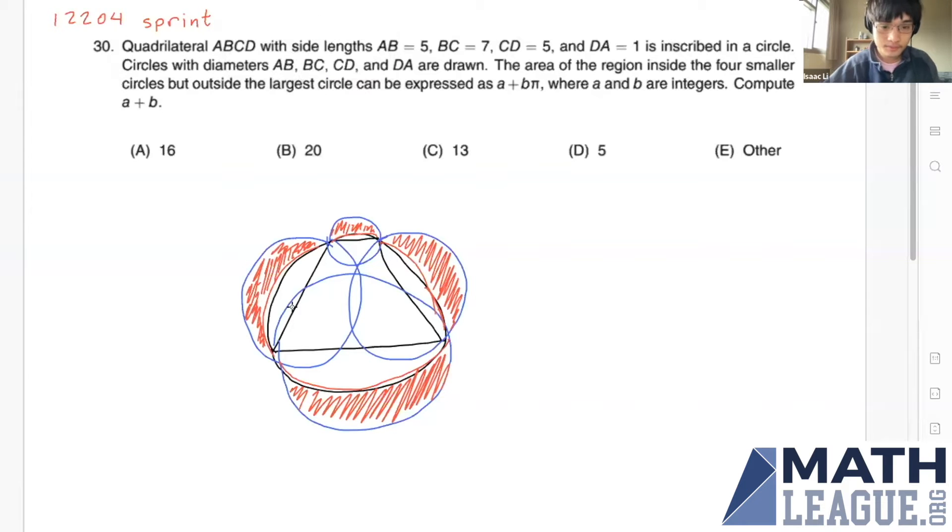And what we can note is that what we want to do is take the areas of these semicircles, which we know, and then subtract off these areas here. So these green areas here, and in order to find the area of this green region, what we can do is just take the large circle and then subtract off this quadrilateral's area.